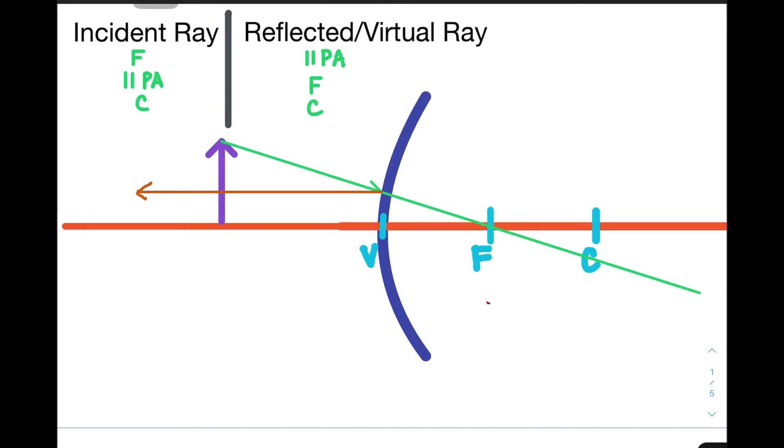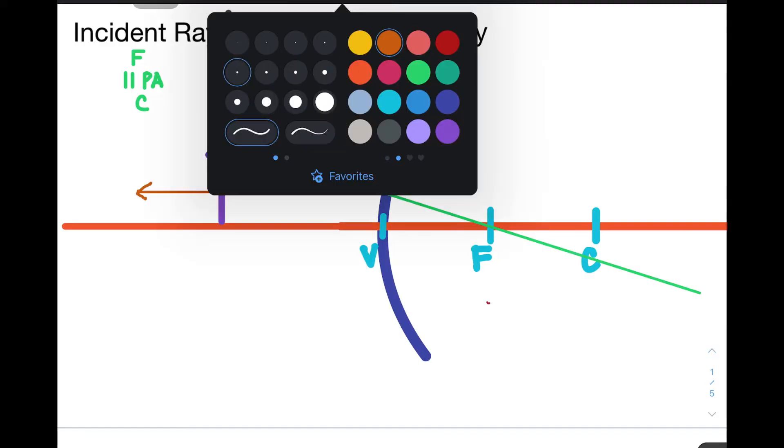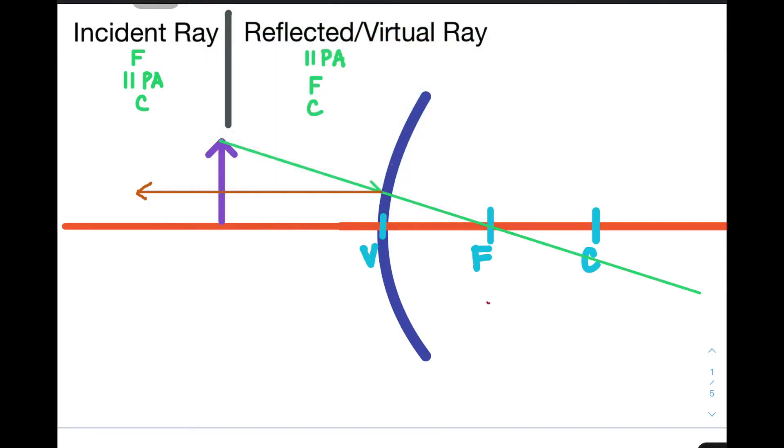Next, let us move on to illustrating a line which is parallel with the principal axis. Again, let's start at the same point and make a parallel line with the principal axis. According to the table, when the line is parallel to the principal axis, when it hits the mirror, the reflected ray should be aligned with the focus.